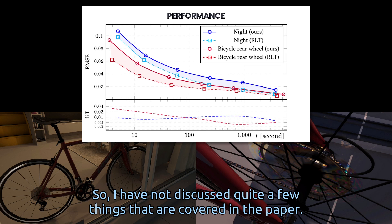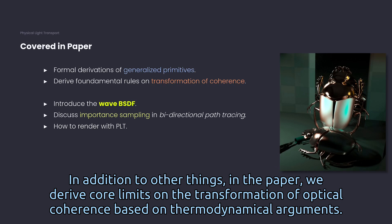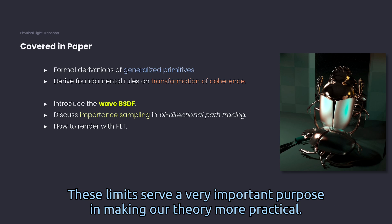So I have not discussed quite a few things that are covered in the paper. In addition to other things, in the paper we derive core limits on the transformation of optical coherence based on thermodynamical arguments. These limits serve a very important purpose in making our theory more practical.